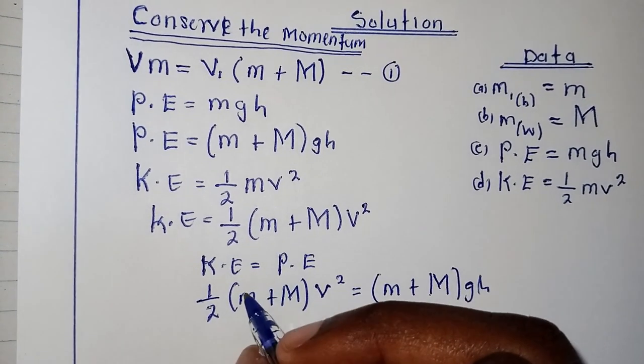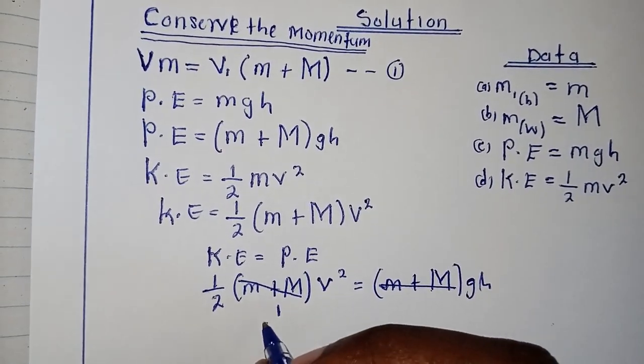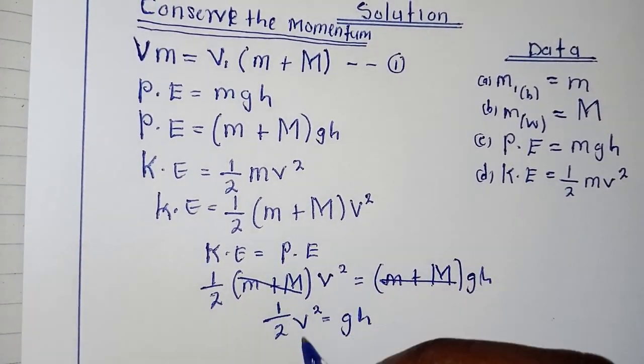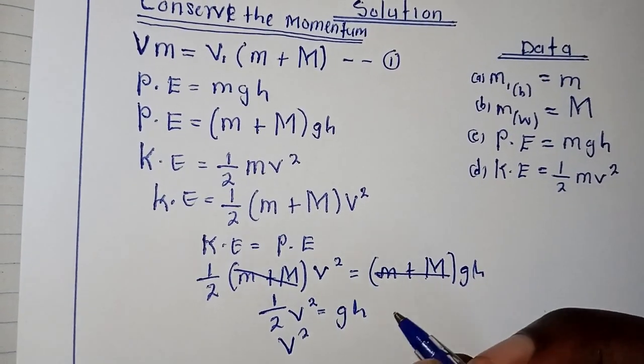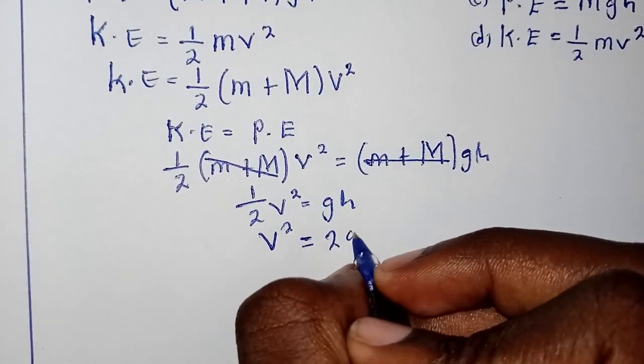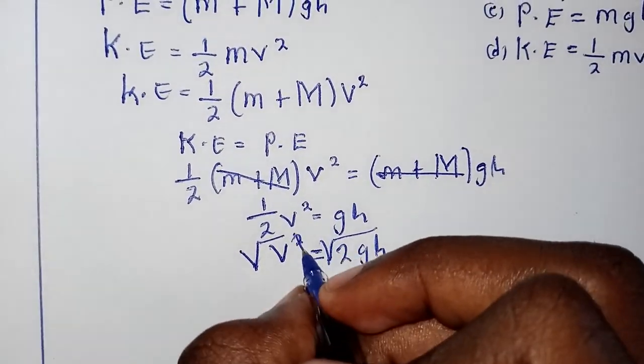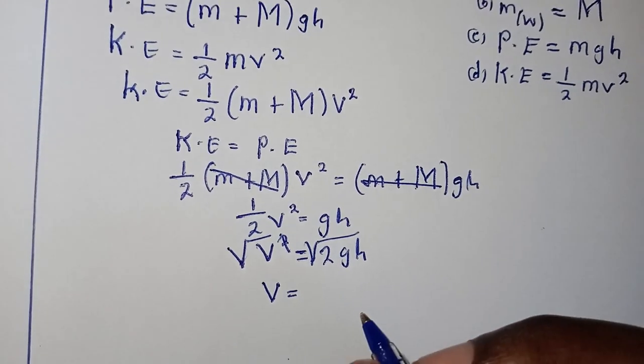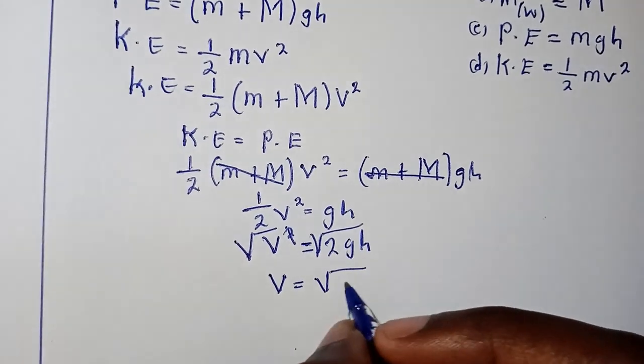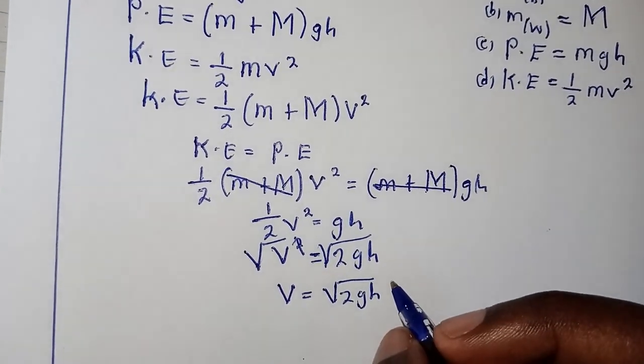Of course we know that this m plus M and this are going to cancel. We remain with half V squared equal to gh. And of course we know that V squared equals 2gh. Square root, we're going to have V equal to the square root of 2gh. We can name this one as solution 2.